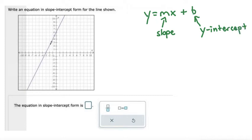When I look at a graph, I think the easiest thing to find is the y-intercept because that's where the line crosses the y-axis. The line crosses the y-axis right here, which is a y value of 6, so that means the y-intercept is 6, or b equals 6.